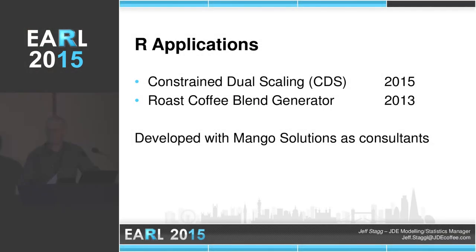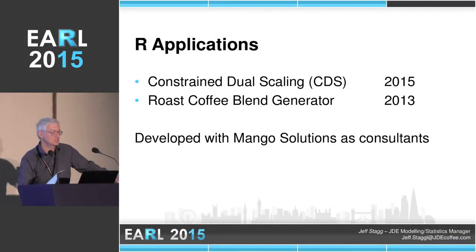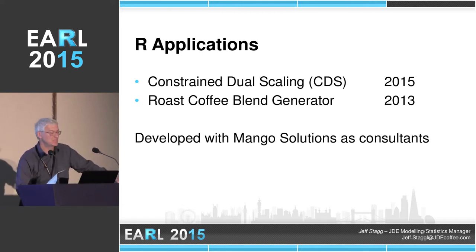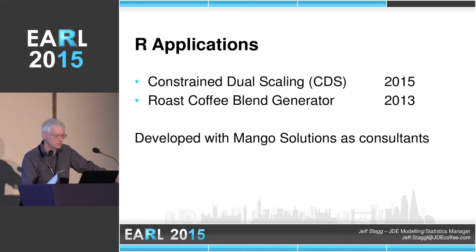I'm here to talk about two R applications: Constrained Dual Scaling, written this year and still in the proofing stage really, and the Roast Coffee Blend Generator from 2013. Both of these applications were developed in consultation with Mango Solutions as our consultants in writing the R scripts.